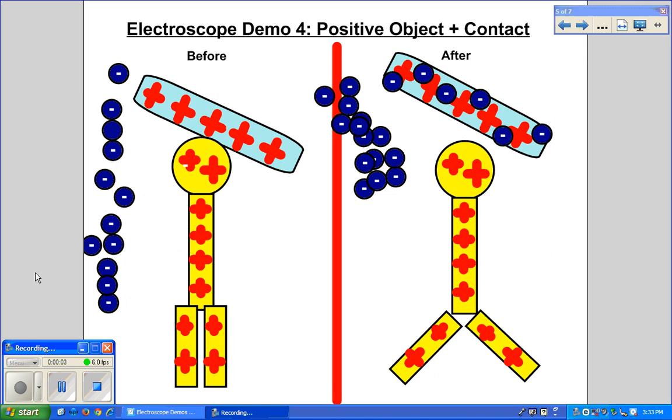This is the second video explaining the electroscope demo. Now we're using a positive object. Again, you have these diagrams on a handout and you want to fill them out as we're going through this video.